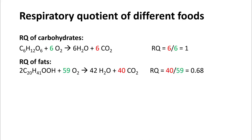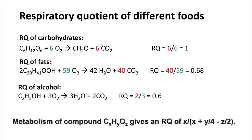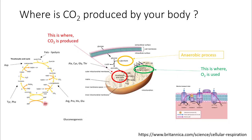The respiratory quotient of fats is much lower, around 0.7, because you release less carbon dioxide and use more oxygen. You can calculate the respiratory quotient of any molecule with carbon, hydrogen, and oxygen in the ratio of X, Y, and Z using the standard formula. CO2 is produced by the metabolism of glucose, since that's where you get your energy from.